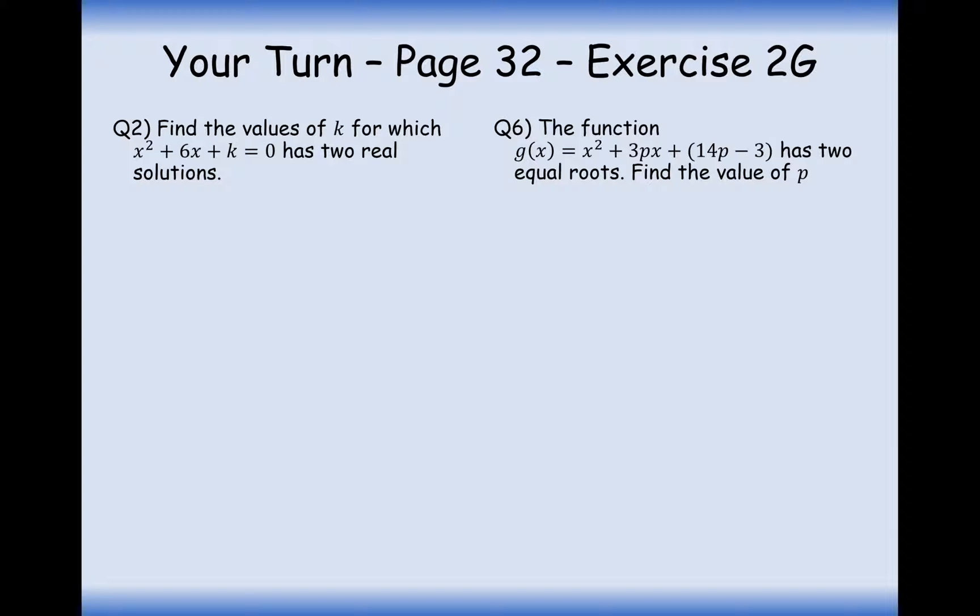Well done for pausing the video. Let's go through these two questions here. Question 1 says that for the value of k, it has two real solutions. So if it has two real solutions, b squared minus 4ac is bigger than 0. So substituting in the values here, 6 squared minus 4k is greater than 0. So 36 is bigger than your 4k. Dividing through by 4, and you're going to get 9 is bigger than k. So therefore, k is less than 9.